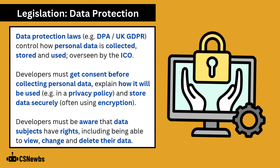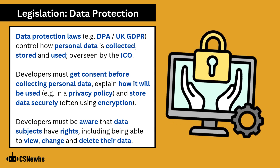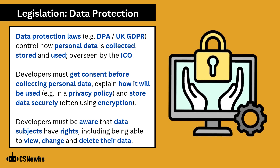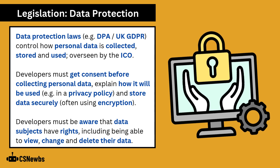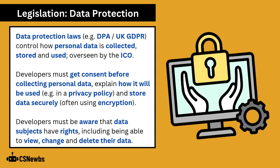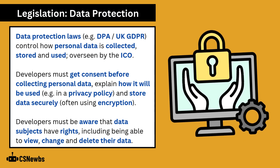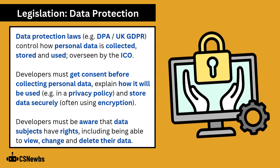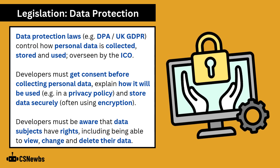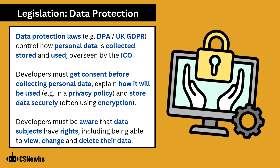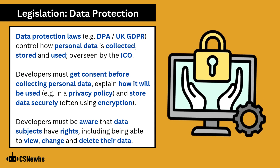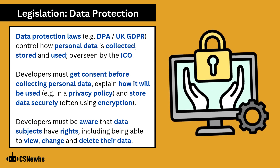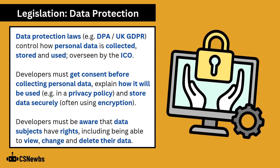Data protection laws, such as the Data Protection Act and UK General Data Protection Regulation, control how personal data is collected, stored, and used. In the UK, this is overseen by the Information Commissioner's Office. Developers must get consent before collecting personal data and explain how it will be used, such as in a privacy policy, and store data securely, often using encryption. Developers must be aware that data subjects have rights, including being able to view, change, and delete their data.